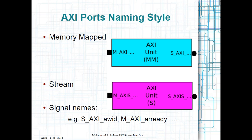I want to briefly review the naming style that Xilinx uses for its AXI interfaces. For an AXI memory mapped unit with master and slave interfaces, the naming convention uses M_AXI for the master port and S_AXI for the slave port. But if you have a streaming component, the master port name contains an 'S' for stream — for example M_AXIS and S_AXIS — with the rest of the name selected by the user.